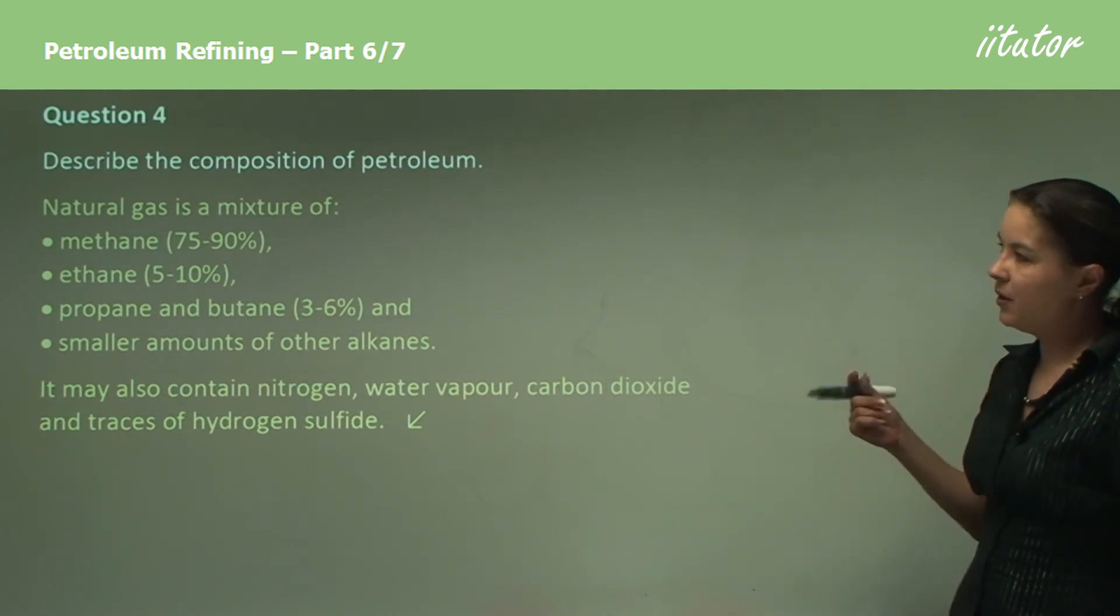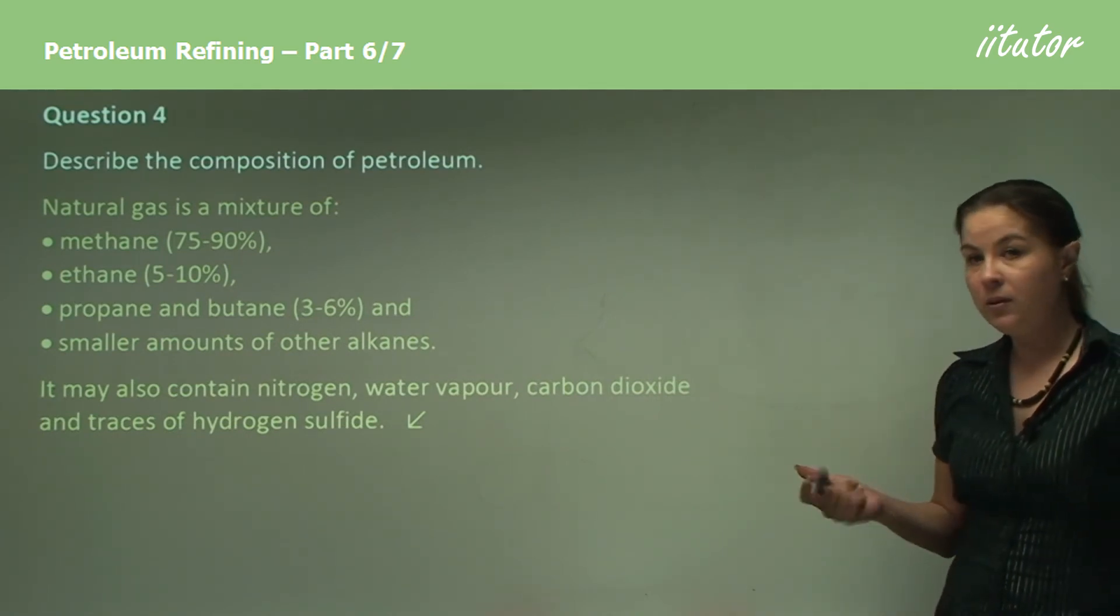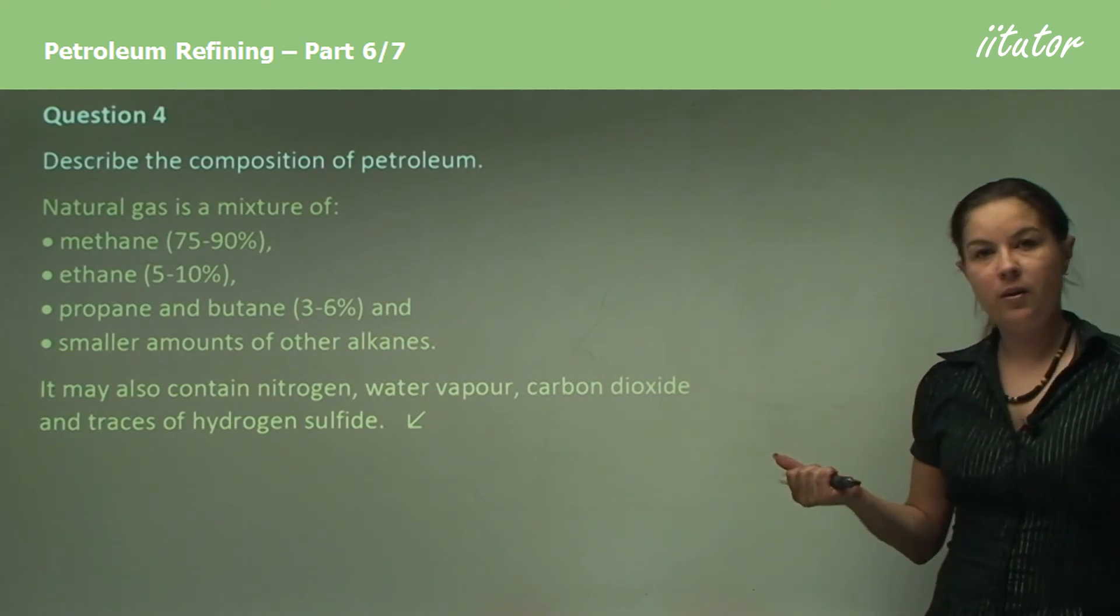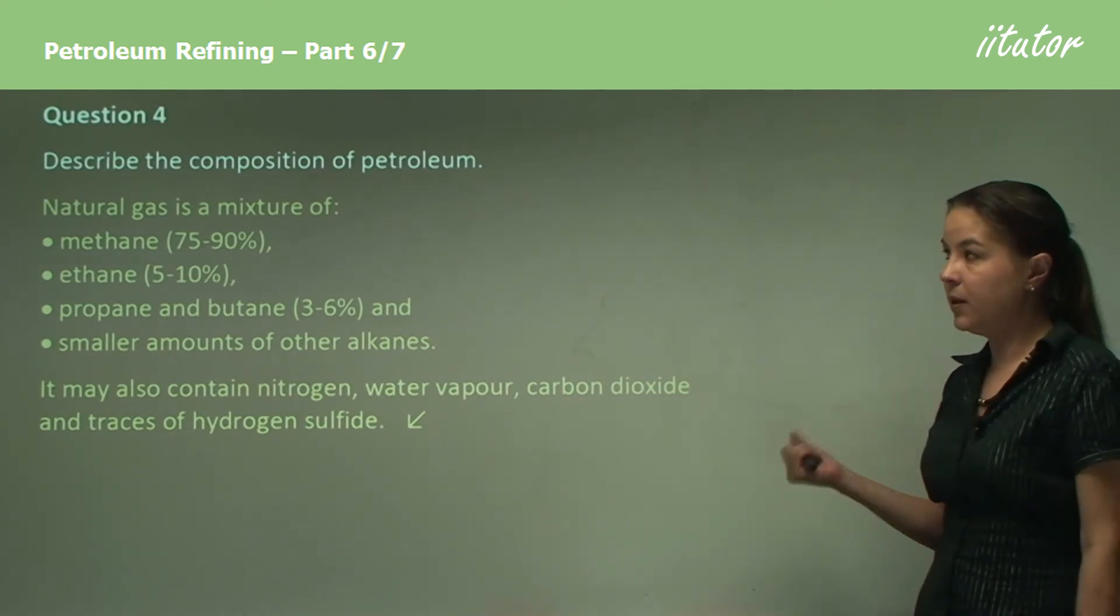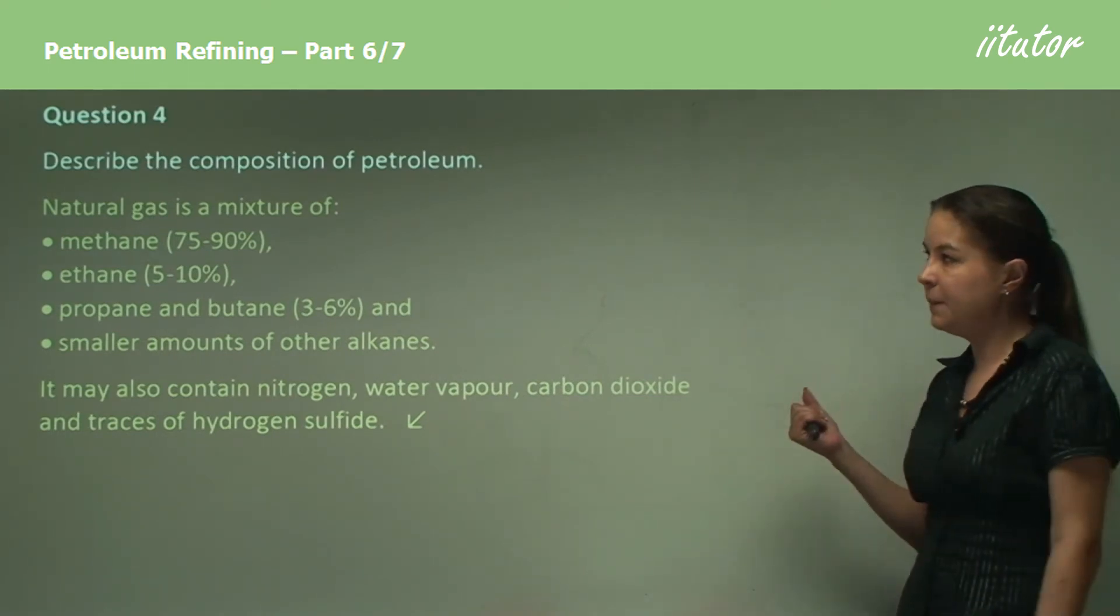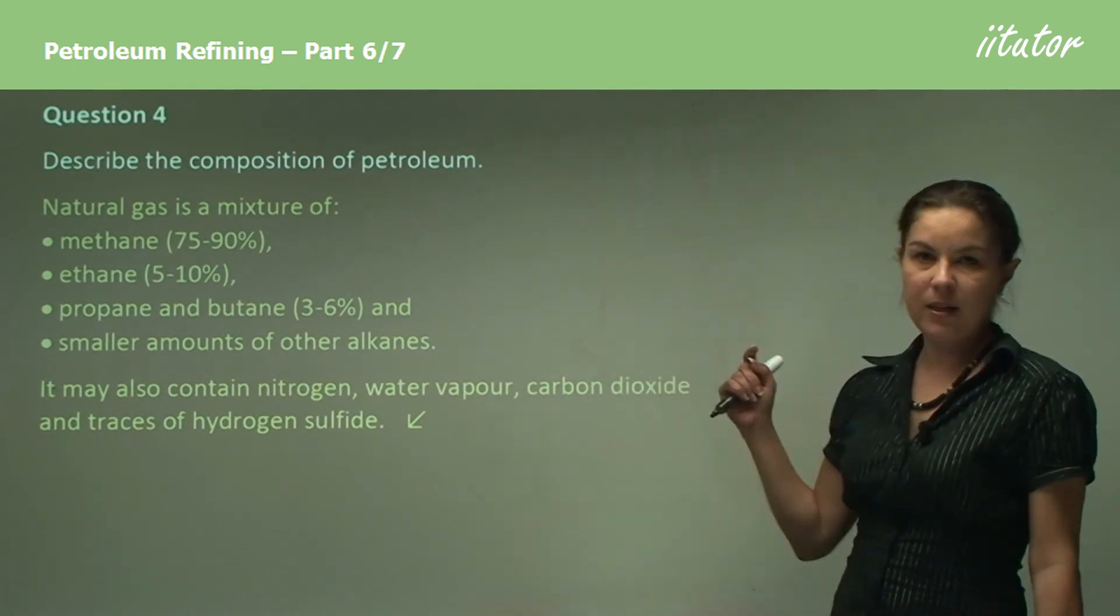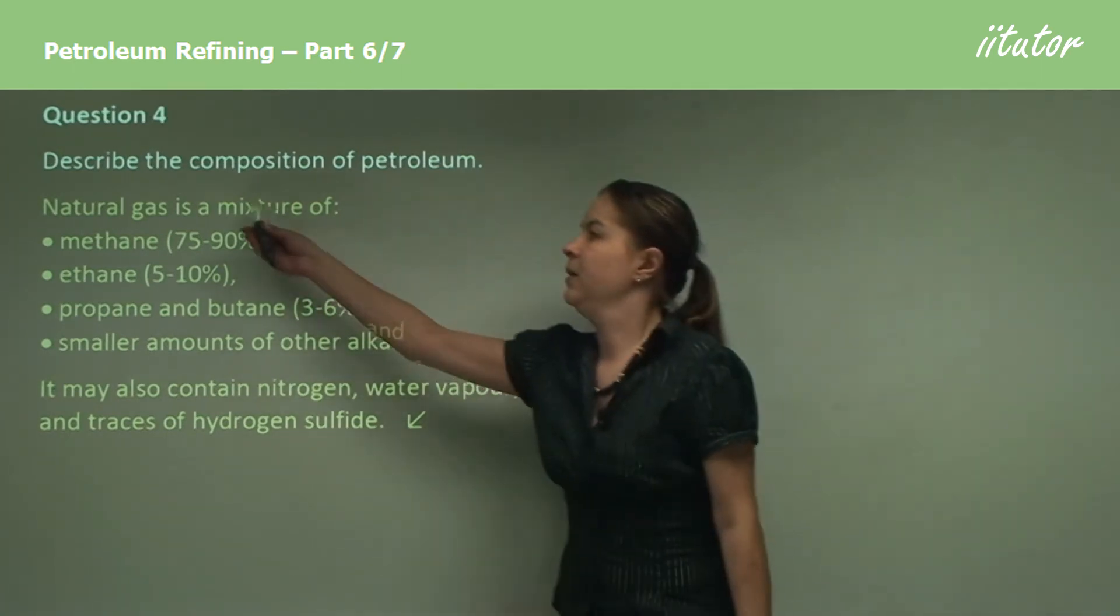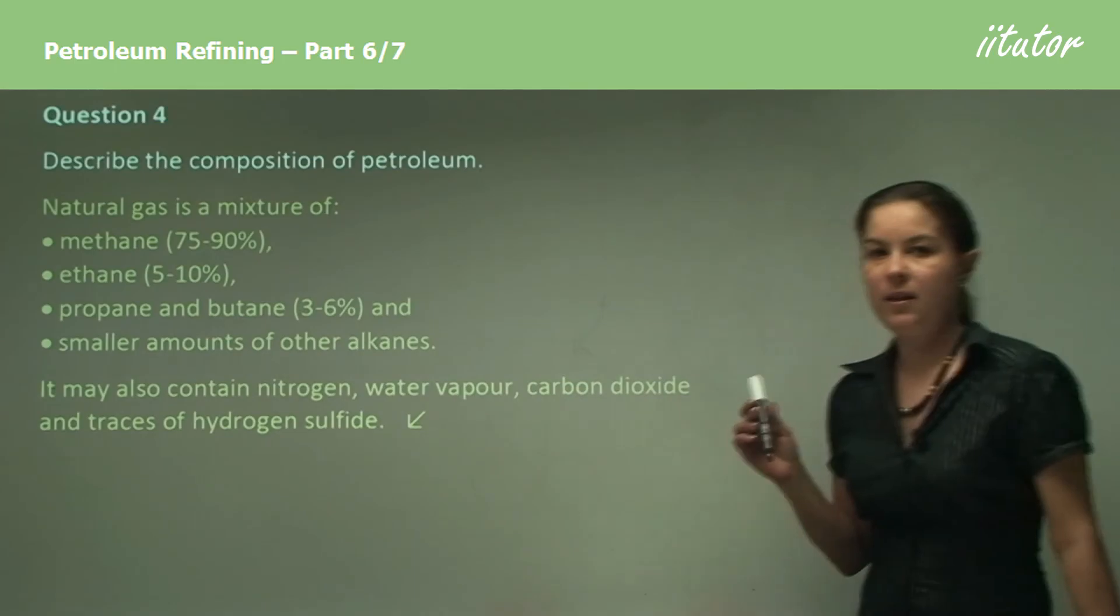So that's your composition of petroleum. Just remember you've got crude oil, which is the majority of alkanes and alkenes from C1 to C25. And on the other hand, we have natural gas, which the majority is methane and ethane.